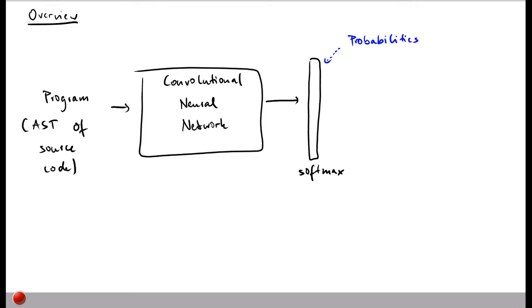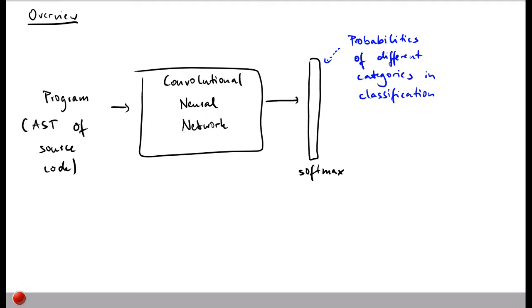To get this probability distribution we use the softmax function, which you've already seen in earlier lectures. What these probabilities indicate is how likely it is that a given program is in one of these different categories. For example, if you want to classify whether a piece of code is written by one author or another, each element in the output vector would indicate the probability that a specific person is actually the author of the given program.